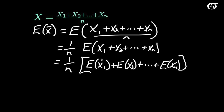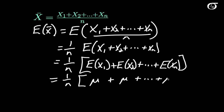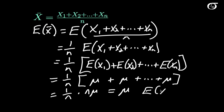The expectation of the sum is the sum of the expectations. We have 1 over n times — what are the expectations here? We're drawing from a distribution with mean mu and variance sigma squared, so the expectation for each term is simply mu. We have mu plus mu plus mu, n times. So this is 1 over n times n·mu, which is simply mu. The expectation of x-bar is equal to mu.